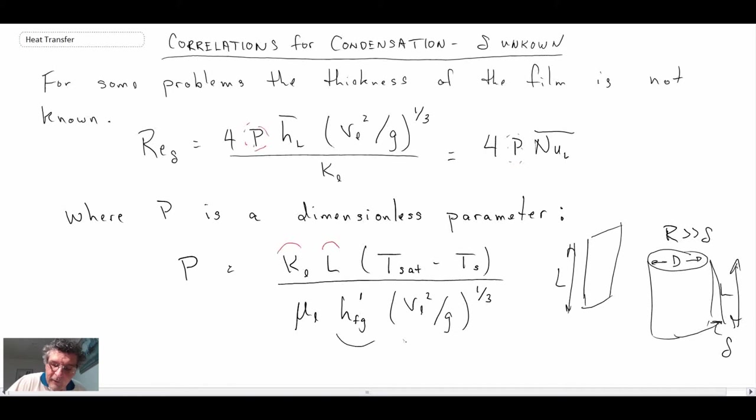The other thing we have, we saw this earlier, this was in the Nusselt number relationship. Remember that is our kinematic viscosity, which is mu_L divided by rho_L. So we have this value of P.